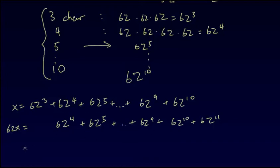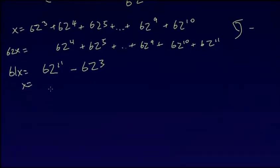That means if we subtract 62x with x, we will be left with 61x. So we subtract these two equations, in which case 61x = 62¹¹ - 62³. That means x = (62¹¹ - 62³)/61.